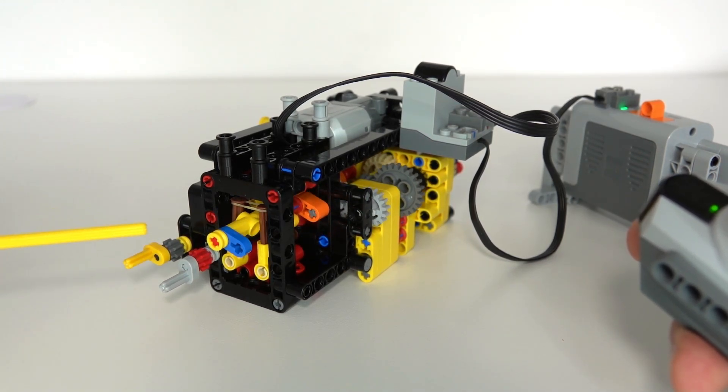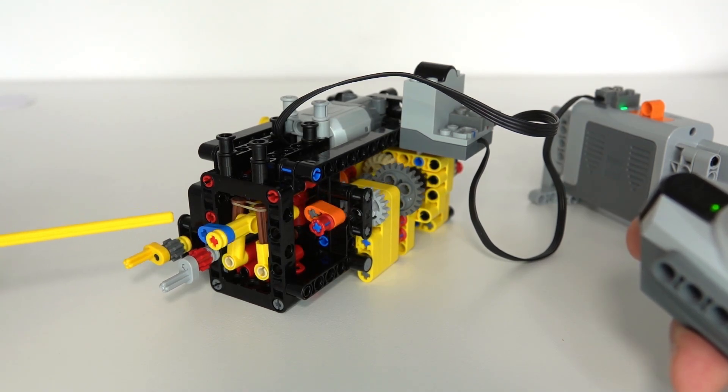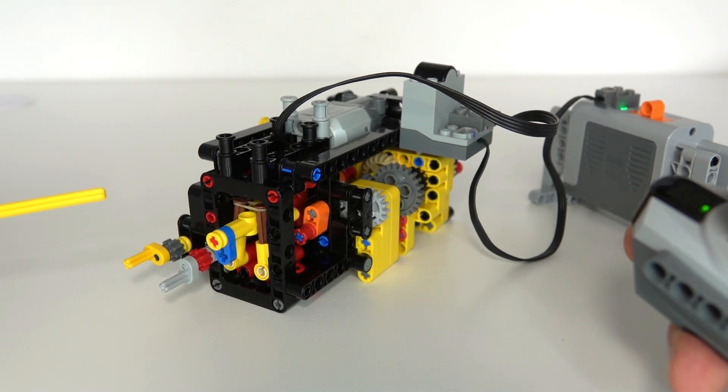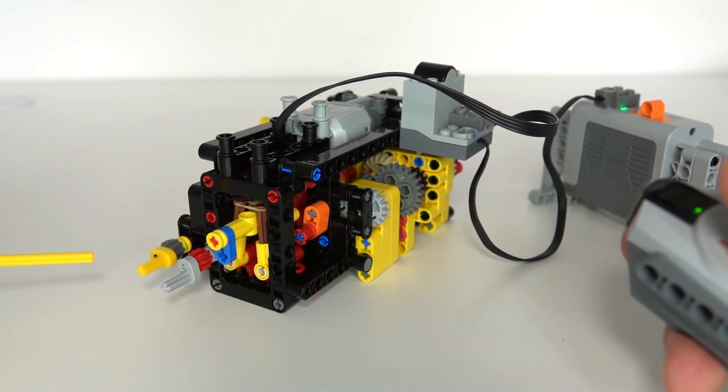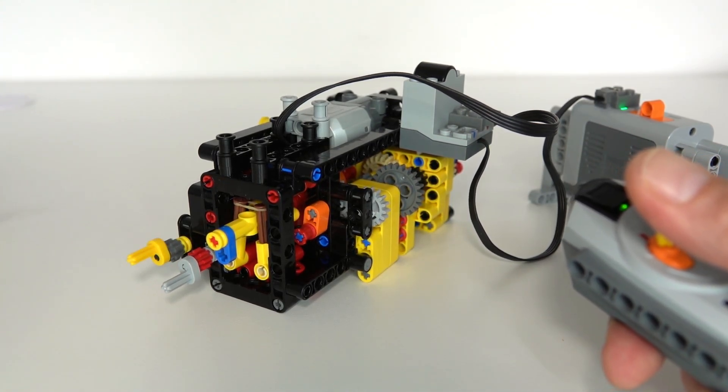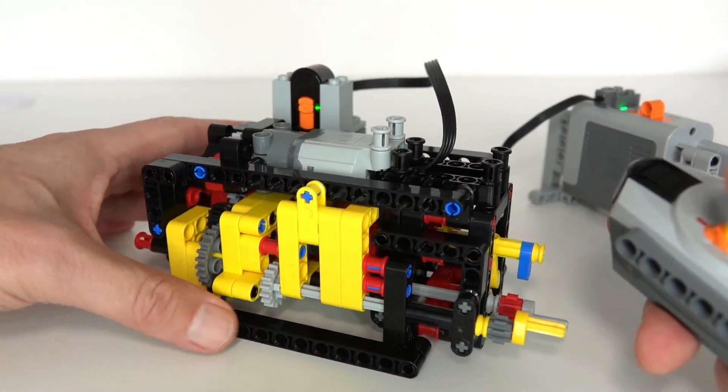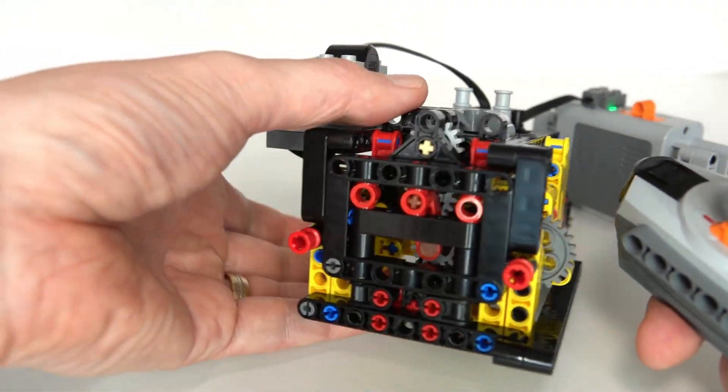We can just carry on and change between the functions that we're after. The great thing about this function selection is you can just keep going around until you're at the function that you're after. For example, that one, and we can activate it by moving the joystick forwards. I'll also just demonstrate the direction selector works no matter what the orientation relative to gravity.